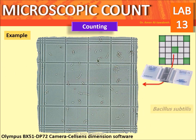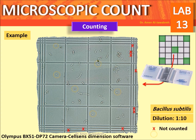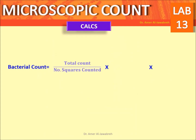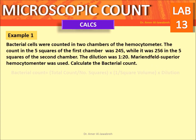Counting example using Bacillus subtilis at a 1-to-10 dilution. Artifacts are not counted. The calculation equation is: bacterial count = (total count / number of squares counted) × (1 / square volume) × dilution factor.